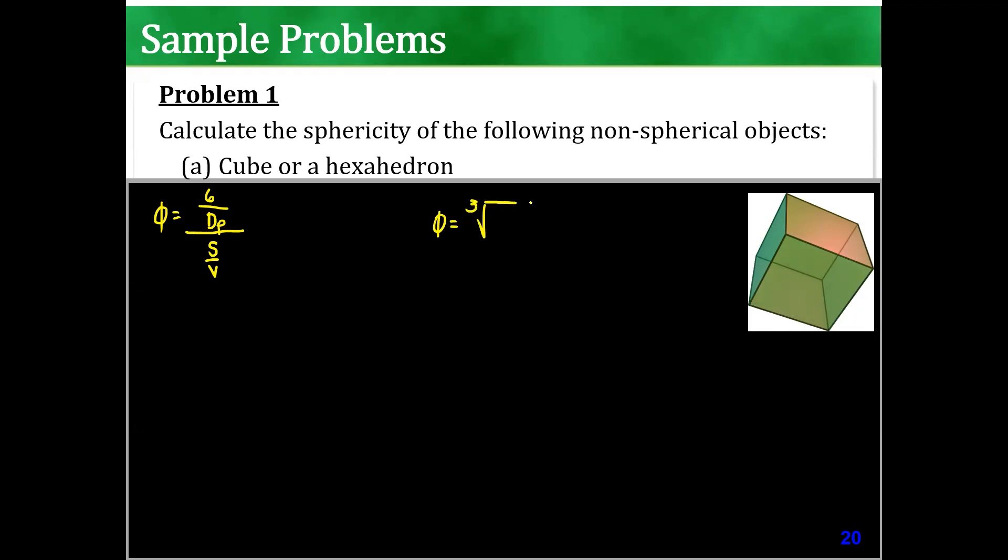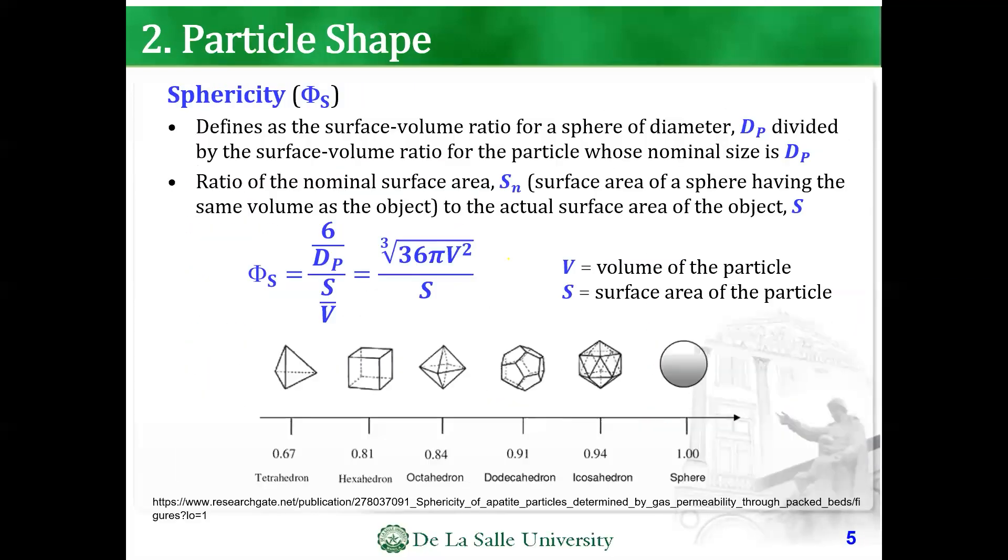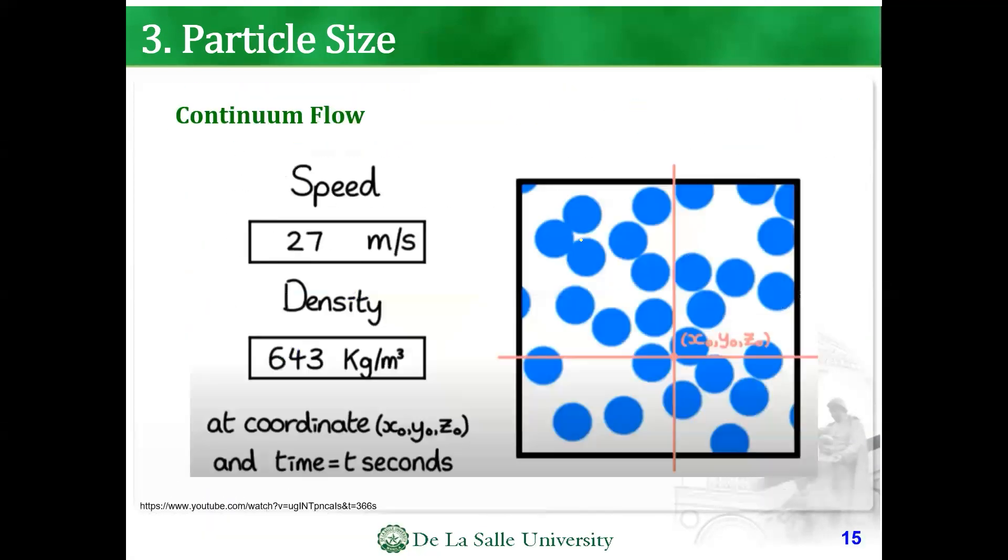The square root, the cube root of 36, what was it? 36 pi V squared, am I correct? Over 6, over what? Over S. Tama? Over S. V squared over S.